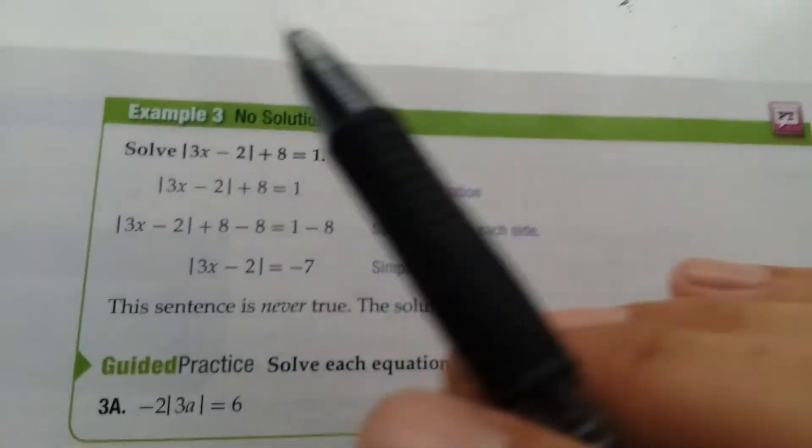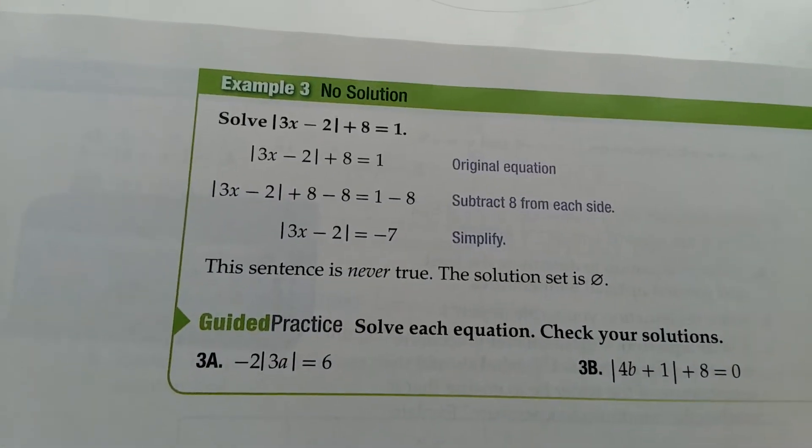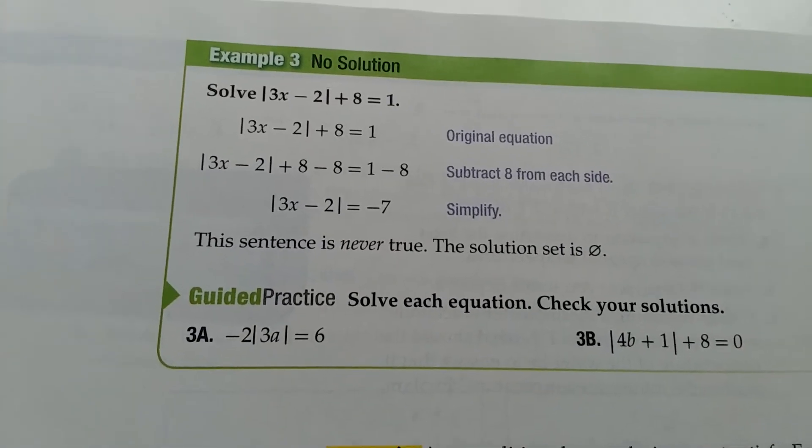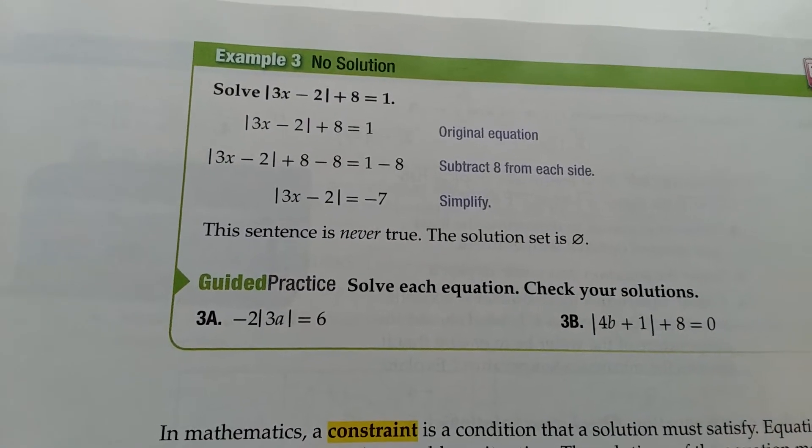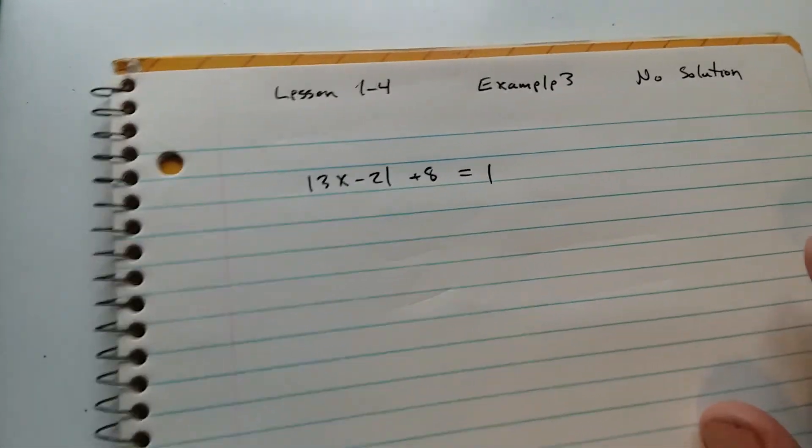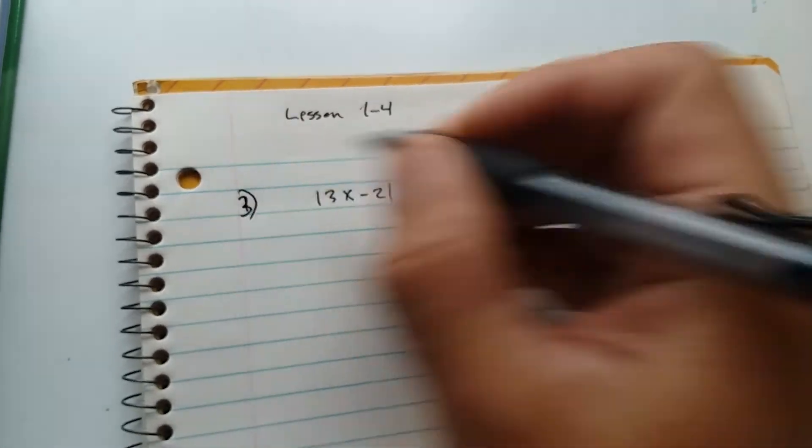Okay, so let's look at this example. Example 3. Solve the absolute value of 3x minus 2 plus 8 equals 1. If you have this, this is example 3.